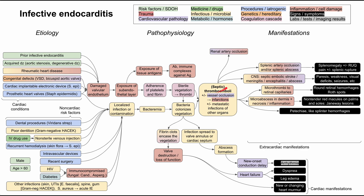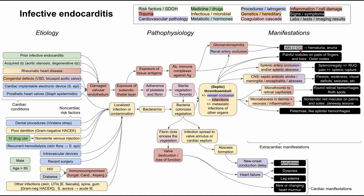The kidneys can also be affected: thromboemboli can go to the renal arteries and occlude blood flow to the kidney. Immune complexes can cause glomerulonephritis through inflammation of the glomeruli, potentially resulting in acute kidney injury, with elevated creatinine and the patient presenting with hematuria or anuria. Immune complexes can also deposit in the pads of the fingers and toes, leading to painful nodules classically called Osler nodes. It's important to differentiate: Osler nodes are painful nodules in the fingers and toes, while Janeway lesions are painless lesions on the palms and soles.